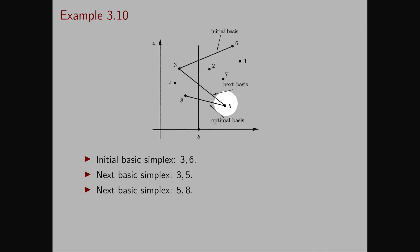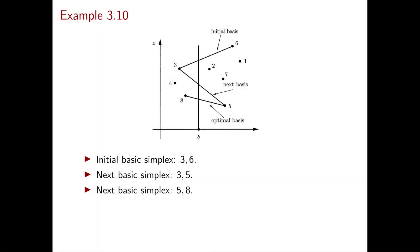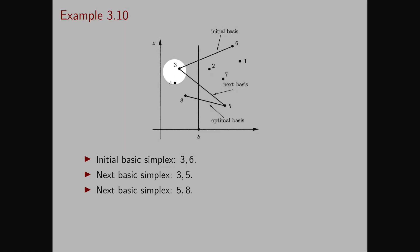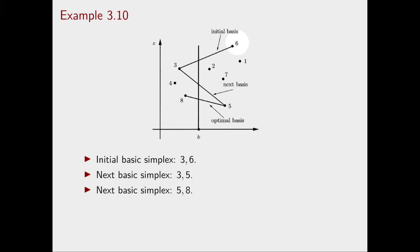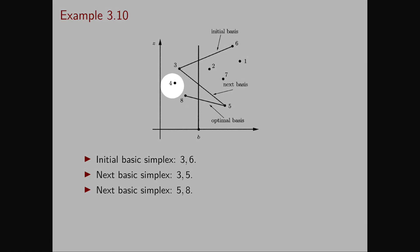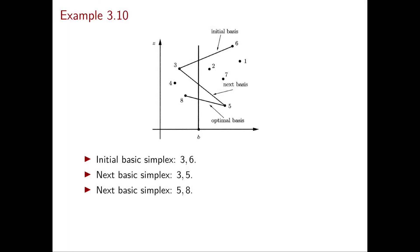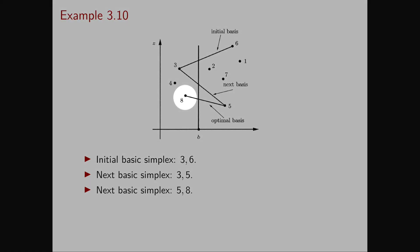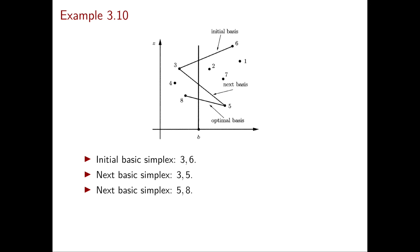So point 5 enters the basis and we decide whether 3 or 6 leaves by constructing segments 6,5 and 3,5. The one that intersects the requirement line is 3,5, so 6 leaves the basis. For the next pivot, only points 4 and 8 are below the line connecting 3 and 5, and the one with the largest vertical distance is point 8. So 8 enters the basis. Forming segments 3,8 and 8,5, the one intersecting the requirement line is 8,5, so 3 leaves the basis. The new basic simplex is then 5,8, which is optimal. This concludes our video on the column geometry of the simplex method.